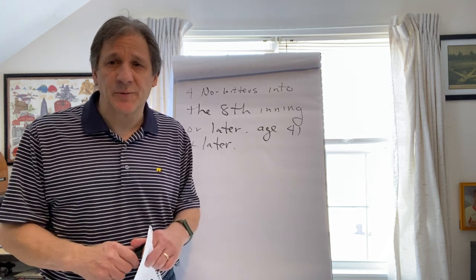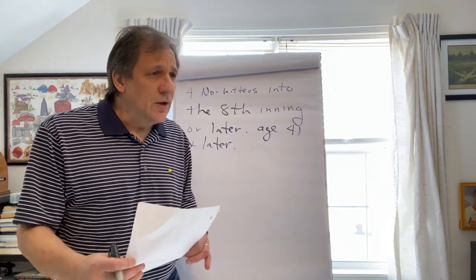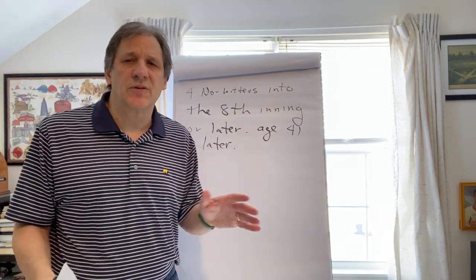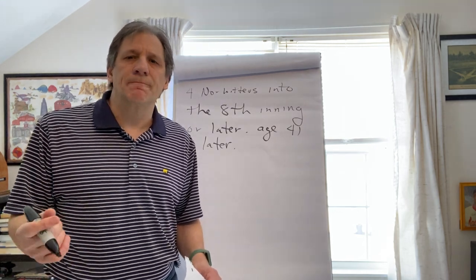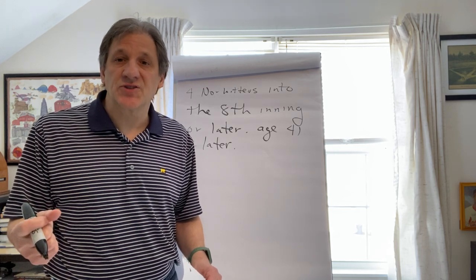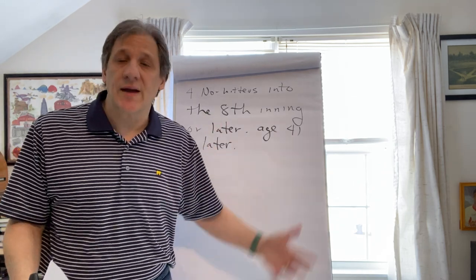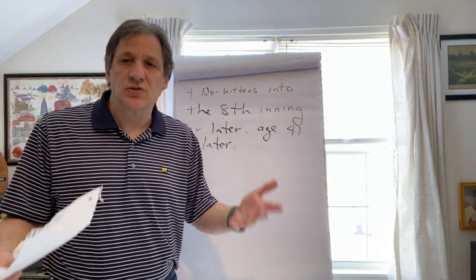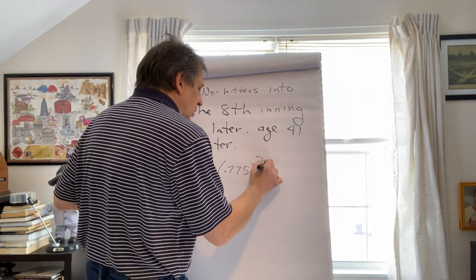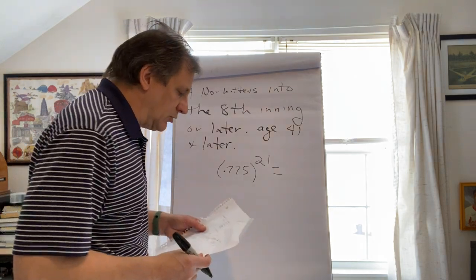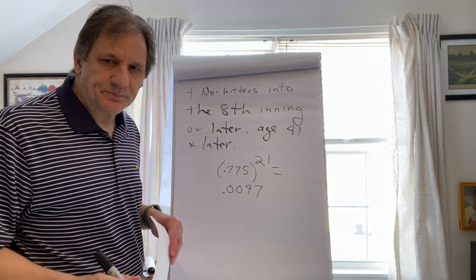It's almost impossible for a pitcher to be pitching at his peak or near his peak in his 40s. So we're going to have it at 77.5%, the probability of getting an out, hence a 22.5% chance of getting a hit for Ryan in his 40s. So how do we work that? It's actually a pretty easy problem. We're going to assume no walks, no errors. If a batter goes to the plate, he either gets a hit or he doesn't. For Ryan to pitch a no-hitter through seven innings, you need an out 21 straight times. It's .775 to the 21st power, and that is equal to .0047.